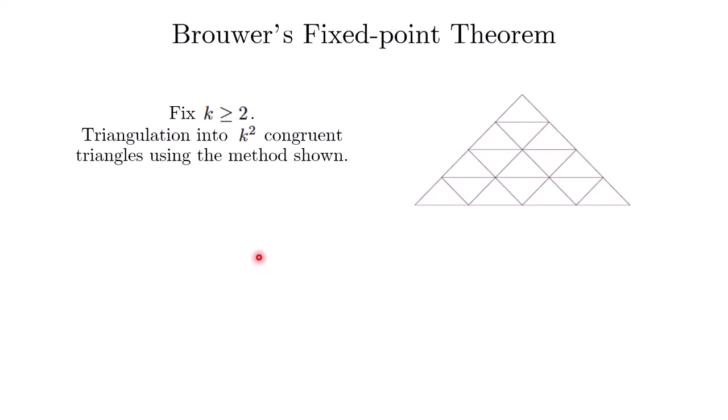For the proof, we fix k, an integer that is at least 2, and consider a triangulation of the parent triangle into k² smaller triangles using the method shown. You can generalize this for arbitrary k. This is the diagram for k equals 4.